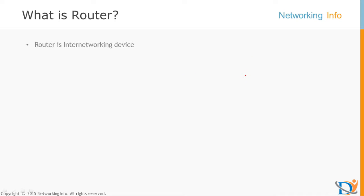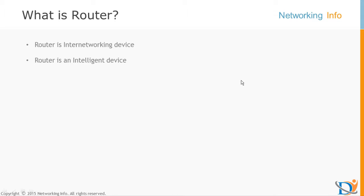Let's talk about something else about router. Router is an intelligent device. Why do we call it intelligent? Because the router can take decisions itself. The router can decide which path to choose and which path not to choose. Let me give a very basic example.